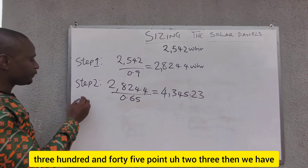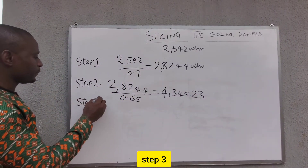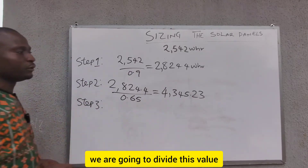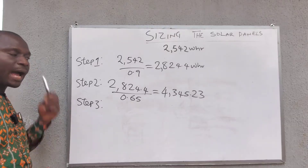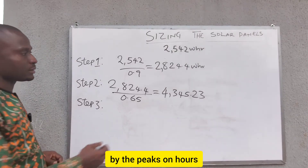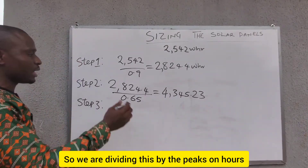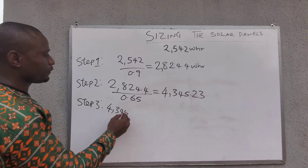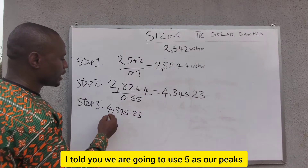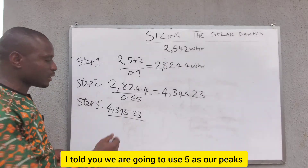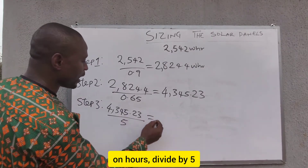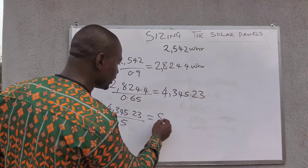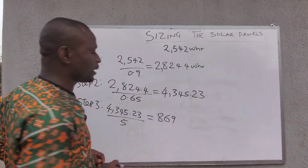Step 3: divide the Step 2 result by the peak sun hours. We are using 5 hours. So 4,345.23 divided by 5 gives us approximately 869 watts.